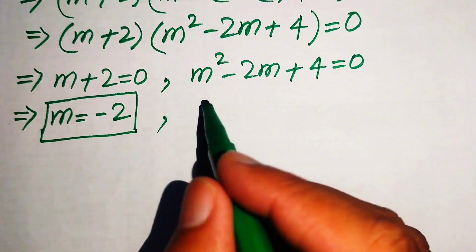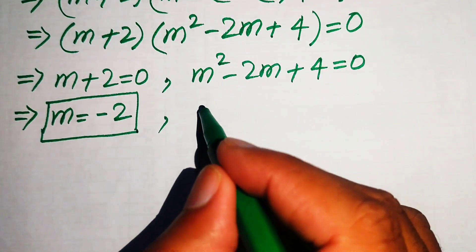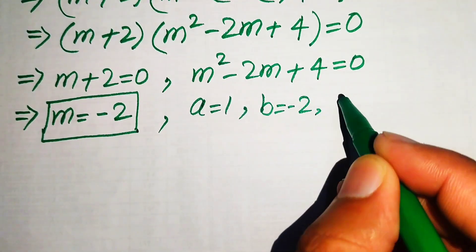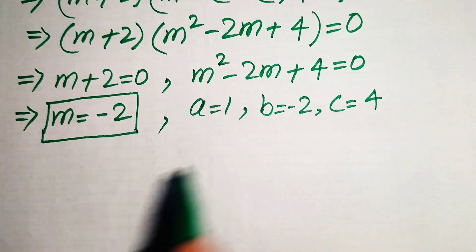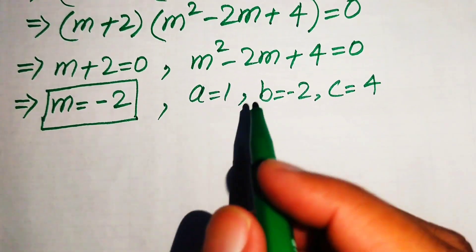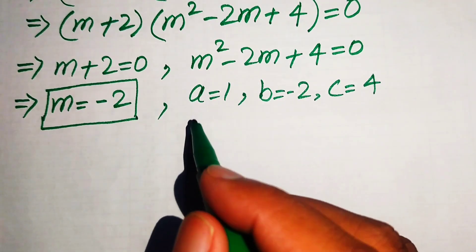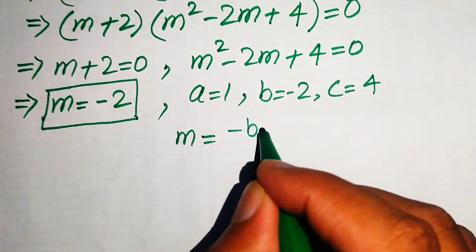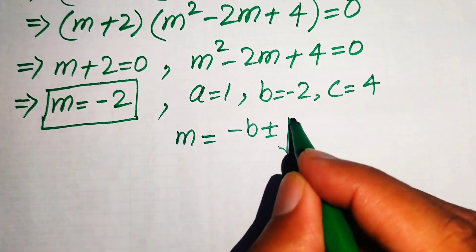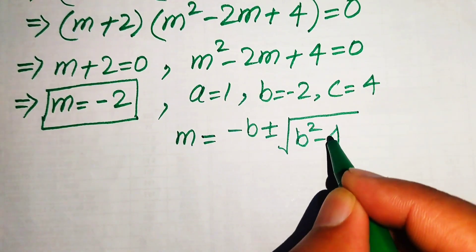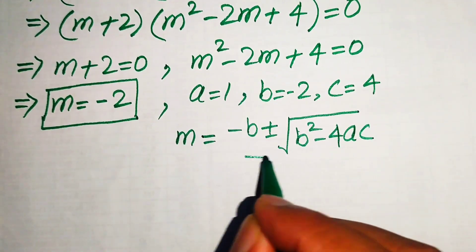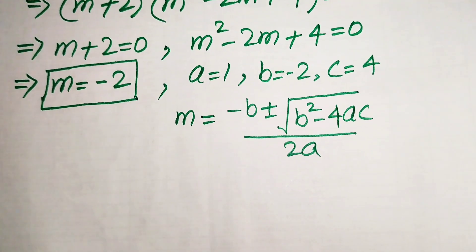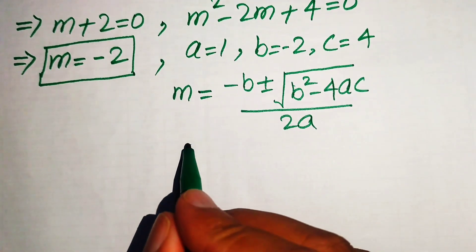First we write the coefficients of this equation: a equals 1, b equals minus 2, and c equals 4. These are the coefficients of the above equation. Now we use the quadratic formula: m equals negative b plus or minus the square root of (b squared minus 4ac), all divided by 2a.